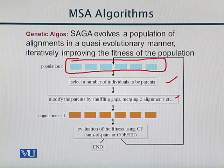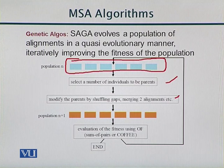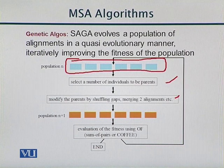To evaluate alignments in SAGA, we can use the Sum of Pairs method, which combines pairwise alignment scores: we take two sequences and get their score, then compare the third against the second, fourth against the next, and sum all results together. Another evaluation method is COFFEE, which is a fitness method for multiple sequence alignment.